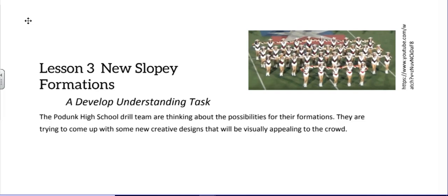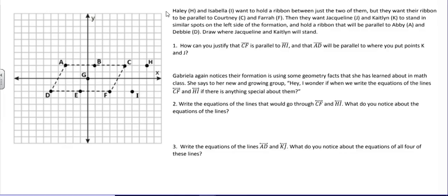Podunk High School drill team are still thinking about different formations and they've come up with some new creative designs. Haley and Isabella want to hold a ribbon between just the two of them, but they want their ribbon to be parallel to Courtney and Farrah. Then they want Jacqueline and Caitlyn to stand in similar spots to the left side of the formation and hold a ribbon that will be parallel to Abby and Debbie.